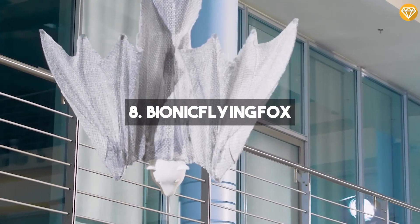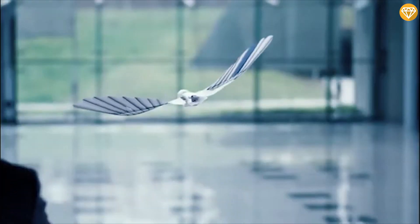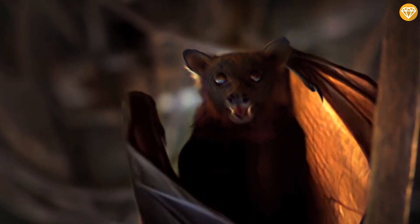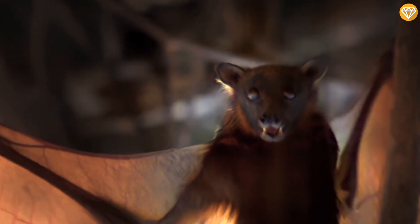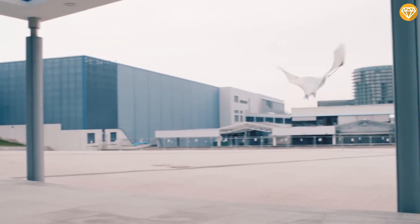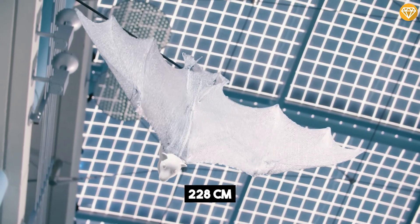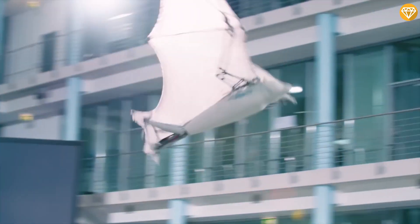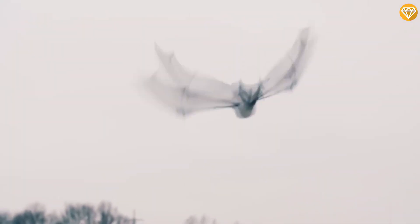Number 8, Bionic Flying Fox. This is an ultralight flying object developed by the Bionic Learning Network, inspired by the flight characteristics of the Flying Fox. With a wingspan of 228 centimeters and weighing only 580 grams, the Bionic Flying Fox mimics the natural flying fox's wing structure.